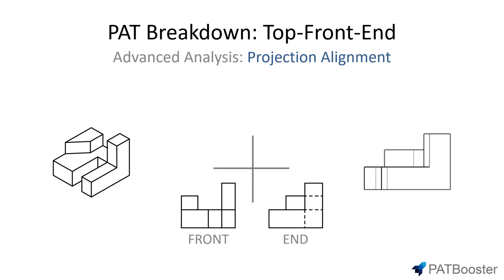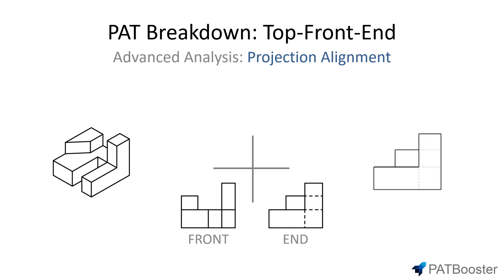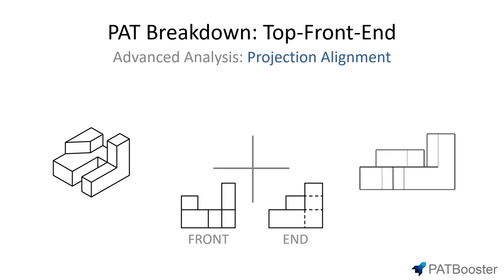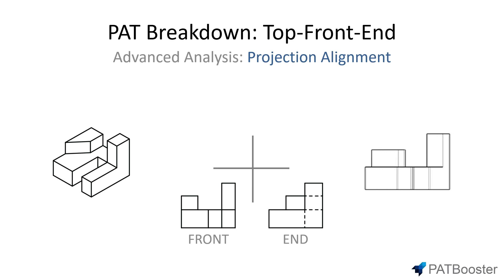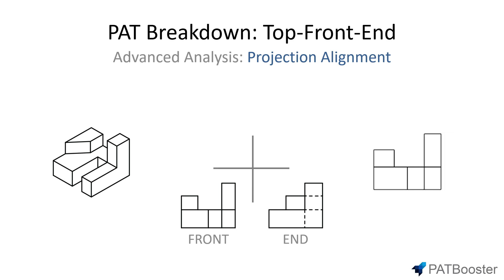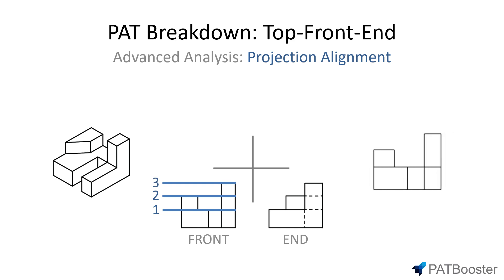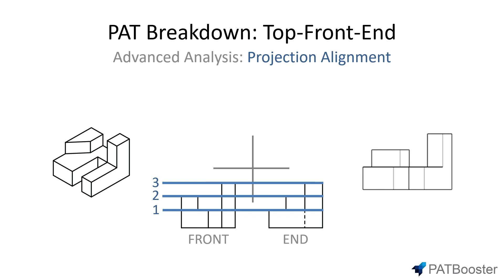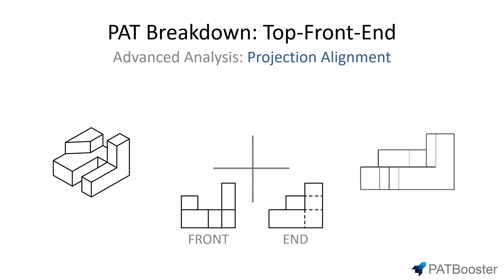Projection alignment for the front and end view is simple since these two projections share the same plane of reference — both the front and end views are perpendicular to the z-axis. Because of this, we can directly match the features of the object to the height level seen. The number of height levels on the front view will always be reflected in the end view as well. If we count up the height levels on the front view, we count one, two, and three. Extending these lines to the end view, we can see they perfectly separate the object into three height levels.